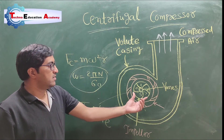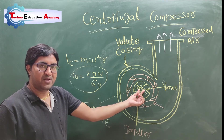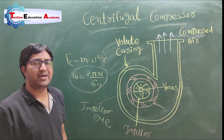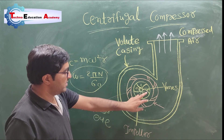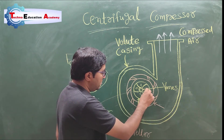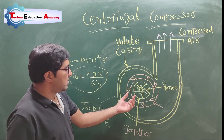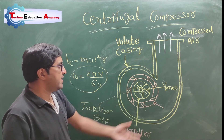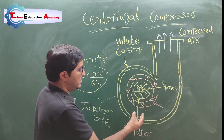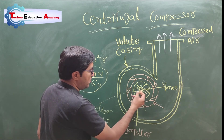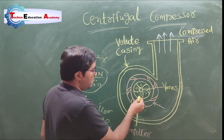Whenever the impeller is rotated by the motor, negative pressure is generated. Since energy always flows from high grade to low grade, suction takes place. The blades of the impeller are curved in shape. The air particles have kinetic energy and they are decelerated because these particles strike with the impeller blades.